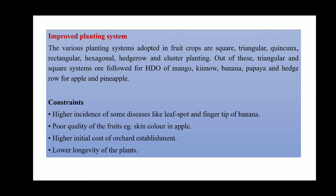Higher initial cost of orchard establishment is a major constraint for farmers because in the initial phase a lot of money has to be invested, which is not possible for every farmer. Lower longevity of the plant — because we are using a lot of chemicals, and sometimes mechanical methods like pruning and training, we are damaging the plant — and because of that we have low longevity, meaning less life of the plants. This is all about HDP and the effect of stock and scion on each other.